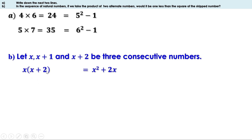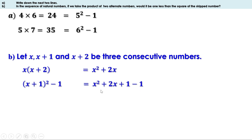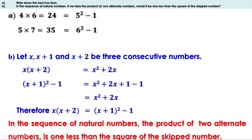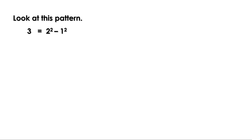The alternate numbers are x and x+2. Their product is x(x+2) = x² + 2x. Now for the middle (skipped) number x+1: (x+1)² − 1 = x² + 2x + 1 − 1 = x² + 2x. These two expressions are equal, so x(x+2) = (x+1)² − 1. In the sequence of natural numbers, the product of two alternate numbers is 1 less than the square of the skipped number.